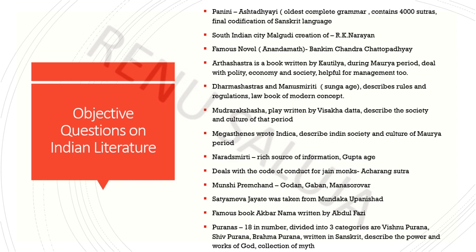आर्थशास्त्र मौर्य पीरियड में लिखी गई थी, और Political Economy और Society पर deal करती है। बहुत helpful है, आज की date में भी ये Management Tool माना जाता है, जो कि 15 Chapters में divide है। धर्मशास्त्र और मनुस्मृति जो कि Sangha Age में लिखे गए, वो Rules and Regulations को describe करते हैं हमारी Societies की। धर्मशास्त्र एक collection of books है — mainly 18 or more books उसमें collect की गई हैं, जो कि Brahmans ने लिखी थीं उस समय की Rules and Regulations बताने के लिए। मनुस्मृति भी उसमें ही एक part है।